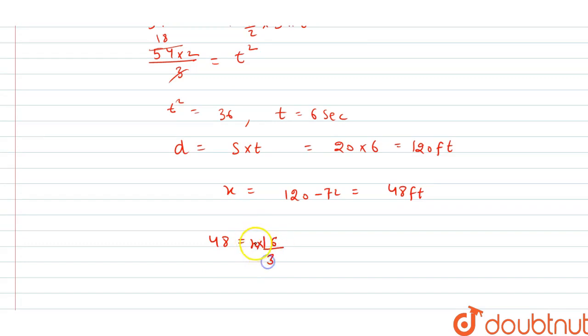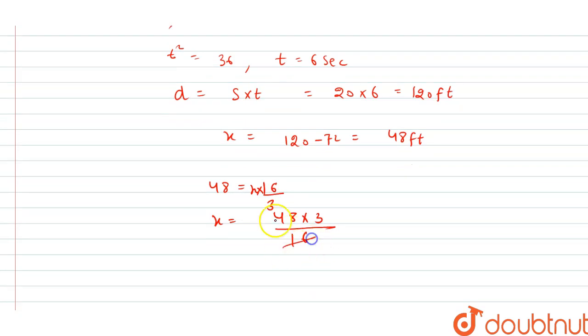x is equal to 48 times 3 upon 16. This will be cancelled to 3, so x is equal to 9.